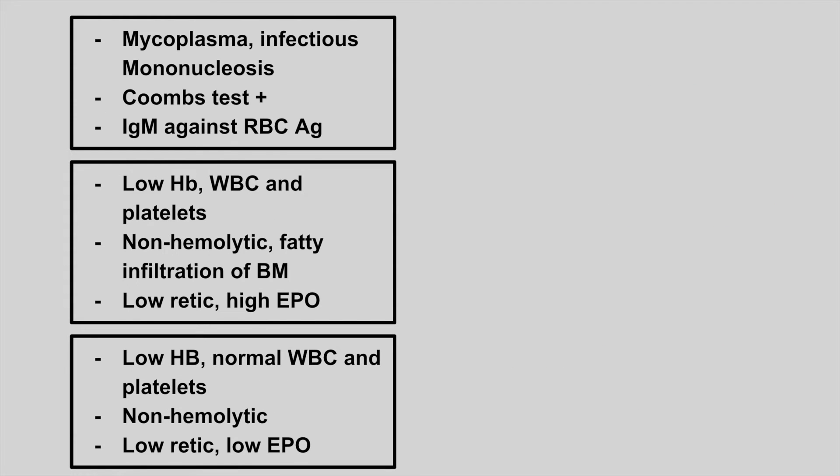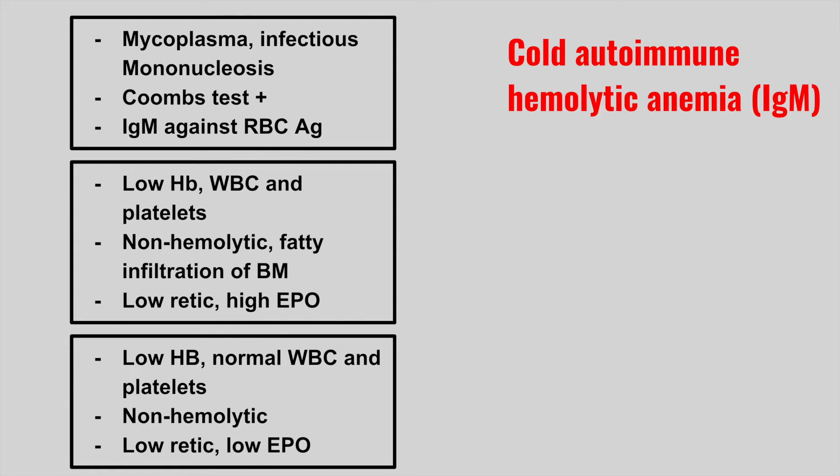Next, we have someone with either Mycoplasma pneumonia or infectious mononucleosis who has a positive Coombs test and IgM against the red blood cell antigen. This is cold autoimmune hemolytic anemia from IgM.